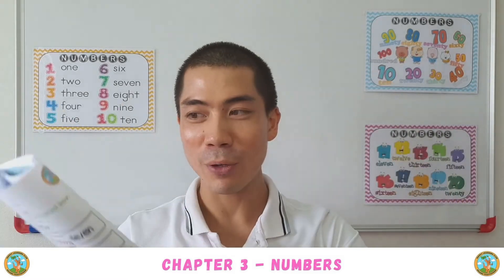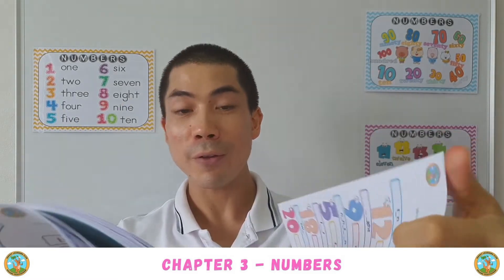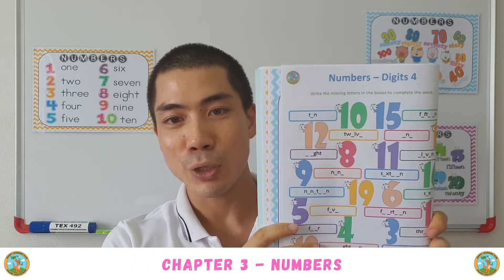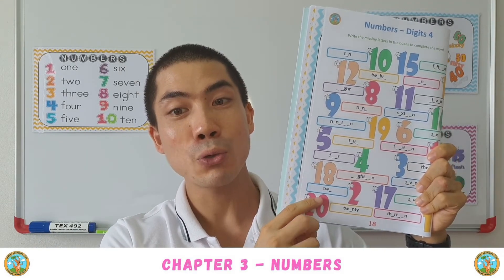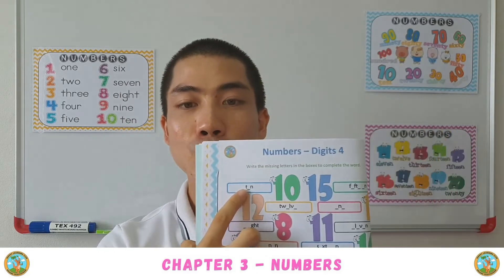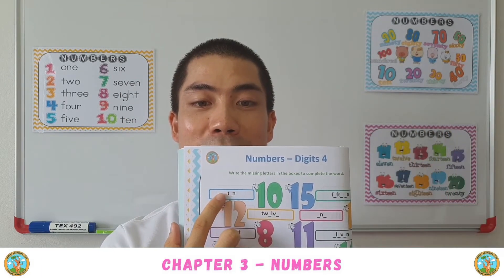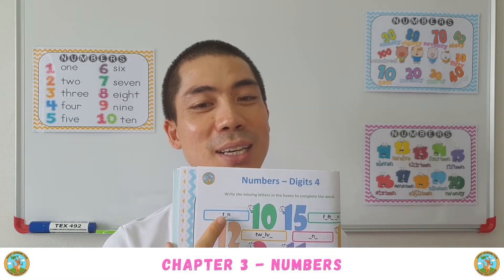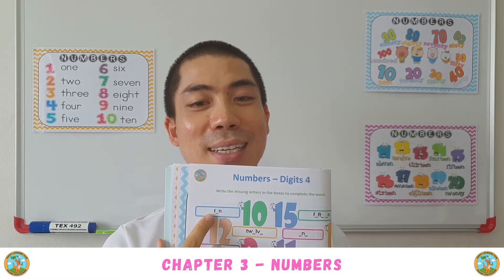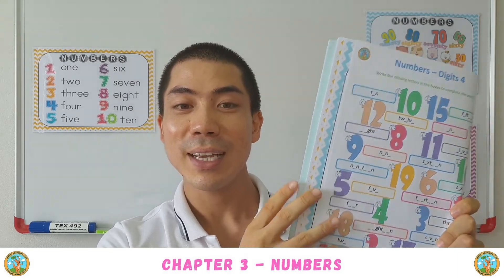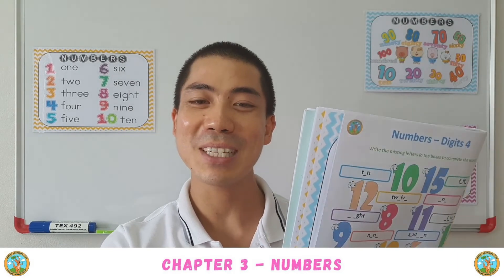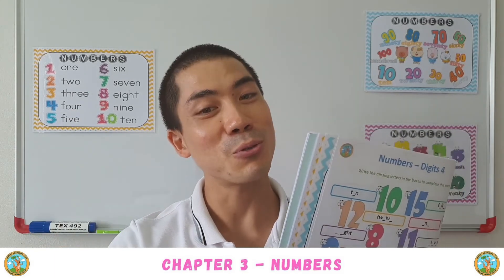And then when we finish this one, we can do the fourth and final worksheet, which is filling in the blanks for all the numbers from 1 to 20. So here we have 10. So how to write 10? We can use our basic phonics. So we can do it like this to write the words. And so we try to fill this out. And then if you want to check, you can look at the previous pages to see if you are correct or wrong.